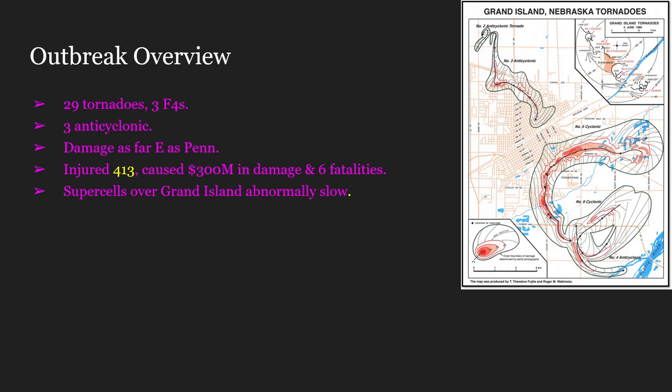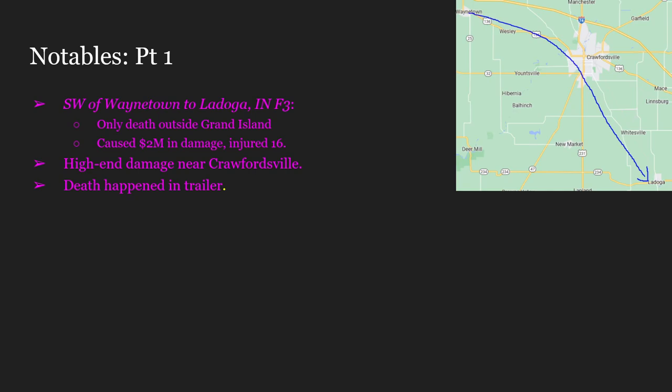Going back to Grand Island, the supercells specifically over this town were moving abnormally slow — only 8 miles per hour, which is around 13 kilometers per hour. If you know anything about supercells, you know that is very, very slow. Usually they are propelled by a cold front, dry line, or squall line, which move upwards of 20 to 30 miles per hour. So them going more than twice as slow is very strange, and I actually do not know why it was like that.